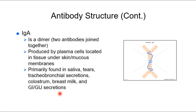IgA is a dimer — two antibodies attached to each other. Produced by plasma cells, you'll find IgA in tissues under the skin and in mucous membranes — in saliva, tears, and mucosal secretions generally. You'll also find IgA in breast milk, which is one way mothers help confer immunity to their babies.